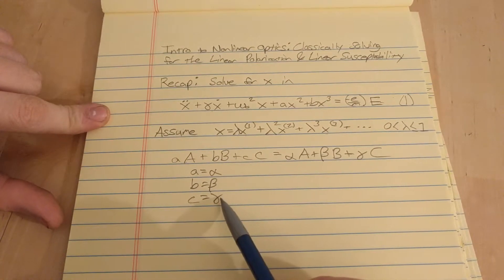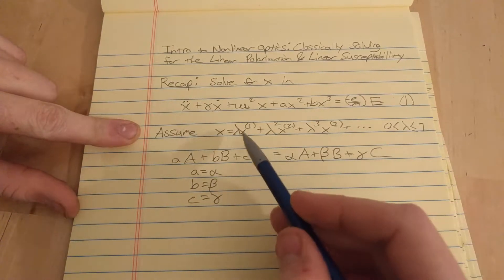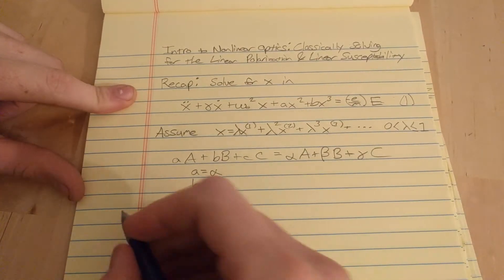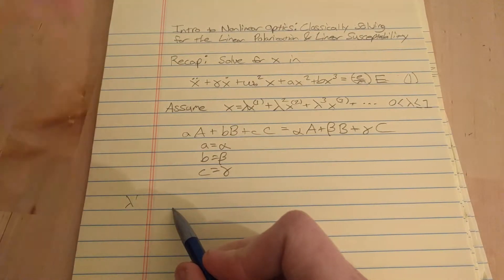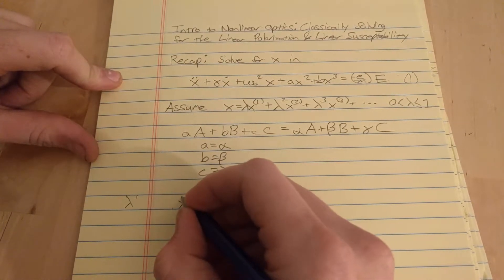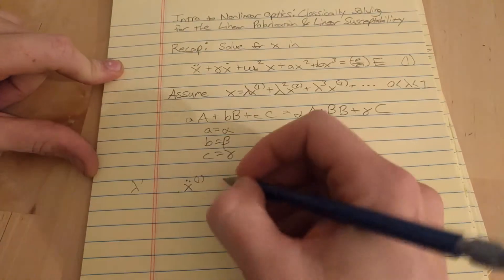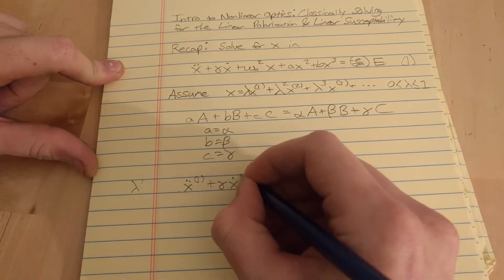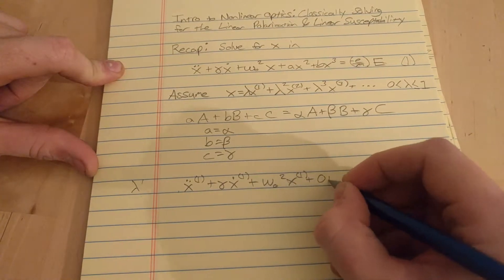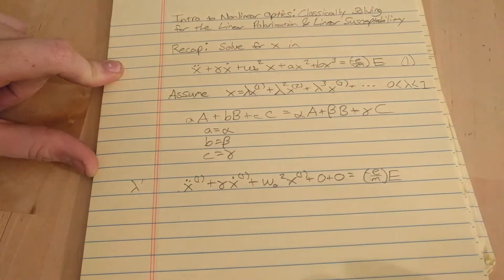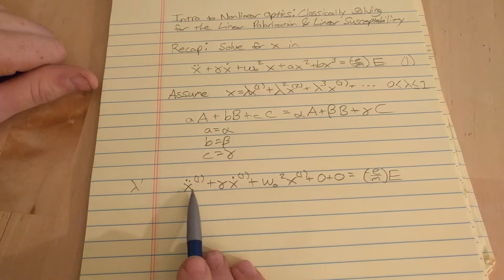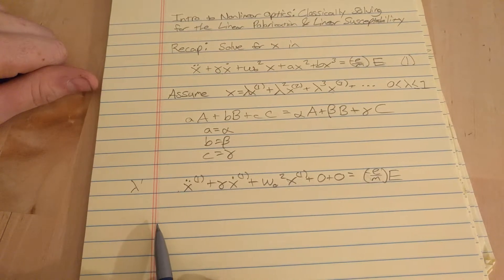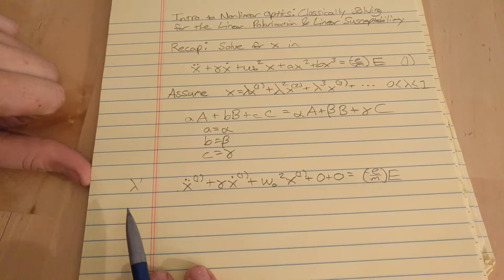So, we're going to use that fact, we're going to be canceling all the lambdas, and so for the first order, for the linear term, the equation we're going to get is this. That's the equation we're going to get. So, I already canceled all the lambdas.